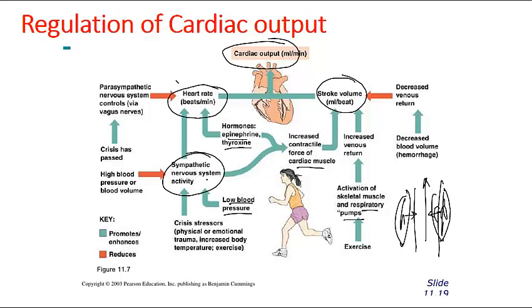High blood pressure increases arterial pressure that the ventricle must overcome before the valves open, increasing end systolic volume and decreasing stroke volume, which ultimately reduces cardiac output. Conversely, a sudden drop in blood volume due to severe blood loss results in low venous return, which decreases stroke volume and therefore decreases cardiac output.